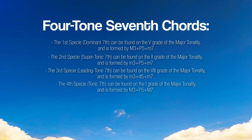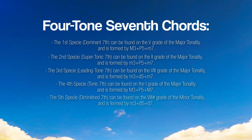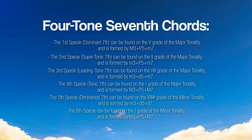The fourth species, tonic 7th, can be found on the 1st degree of the major tonality and is formed by a major 3rd plus a perfect 5th plus a major 7th. The fifth species, diminished 7th, can be found on the raised 7th degree of the minor tonality and is formed by a minor 3rd plus a diminished 5th plus a diminished 7th. The sixth species, mediant 7th, can be found on the 3rd degree of the minor tonality and is formed by a minor 3rd plus a perfect 5th plus a major 7th. The seventh species, mediant 7th, can be found on the 3rd degree of the minor tonality and is formed by a major 3rd plus an augmented 5th plus a major 7th.